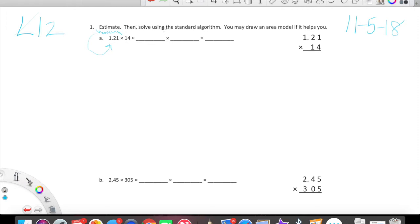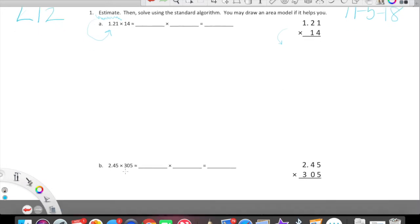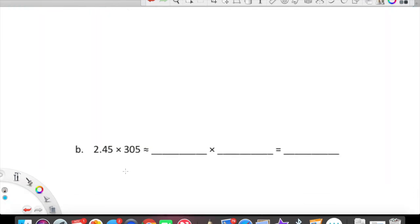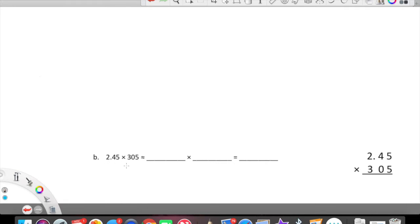So here we are going to estimate, then solve using the standard algorithm. If area models are your jam, then go for it. We're going to go ahead and round and then do the standard algorithm and make sure that our estimate matches pretty closely as far as place values go with our final. I'm particularly interested in B. 2.45 times 305. 2.45, we are going to round to 2. 305, we are going to round to 300. 2 times 3, no problem, 6. And we're bringing along 1, 2 zeros.